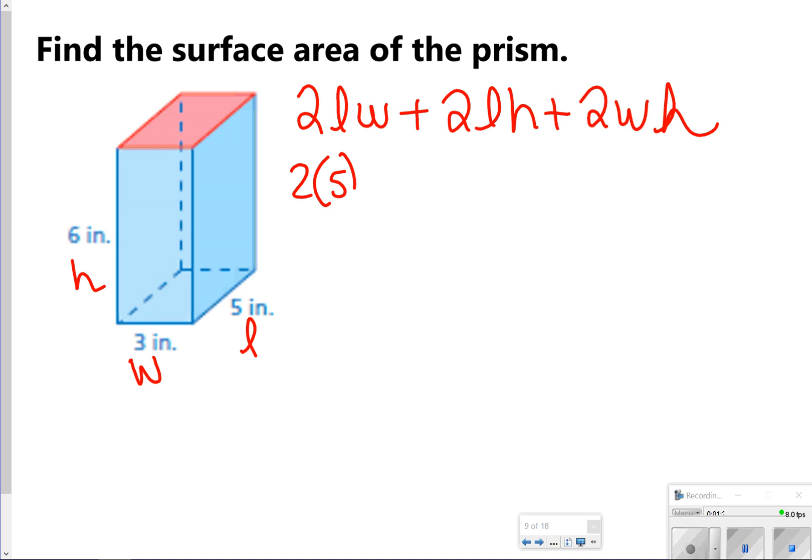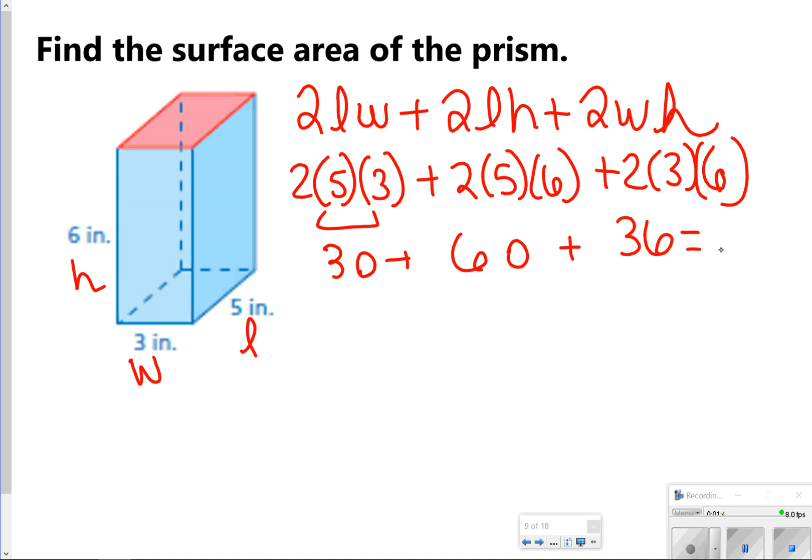2 times 5 times 3 plus 2 times 5 times 6 plus 2 times 3 times 6. 2 times 5 times 3 is going to give me 30. 2 times 5 times 6 is going to give me 60, and then 2 times 3 times 6 will give me 36. And when I add them all together, I get 126 inches squared. Very easy.